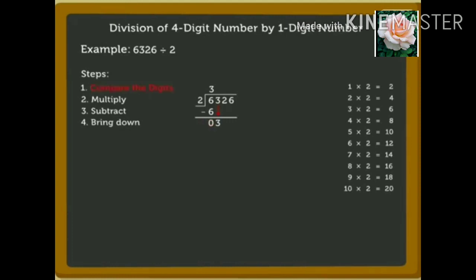3 is greater than 2, so we can divide 3 by 2. 1 times 2 is 2. Hence, we write 1 above 3 and 2 below 3. Now, by subtracting, we get the remainder 1. Now, we bring down the next digit, that is 2. Therefore, we get the number 12.